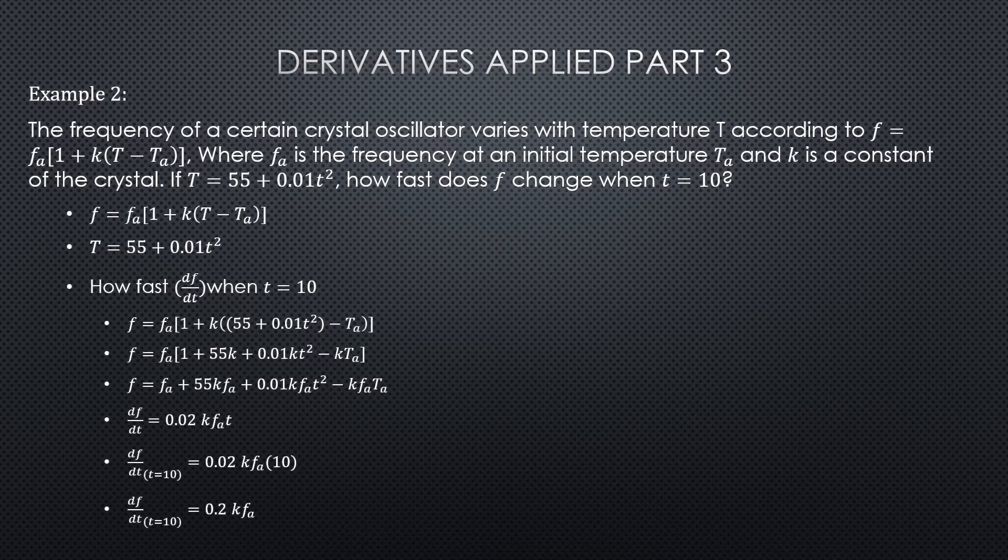So this one's confusing because there's T temperature, capital T temperature, and little t time. And we want to find df/dt, and the dt is time. So now we can take the df/dt, and you see that it's just that middle term that we're going to take the derivative of. The other ones don't have t time in it, so they just go away.